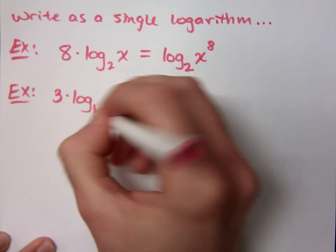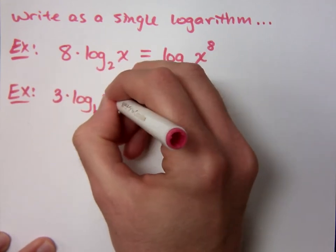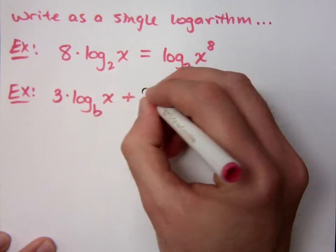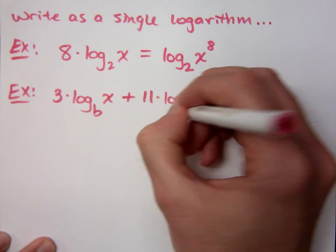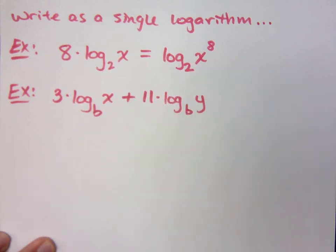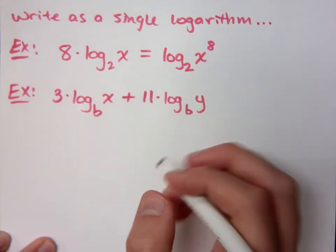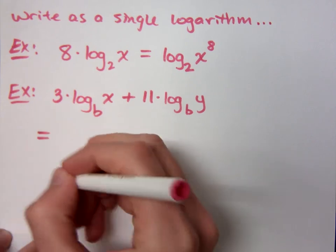3 times log base b of x plus 11 times log base b of y. What do you think that means?